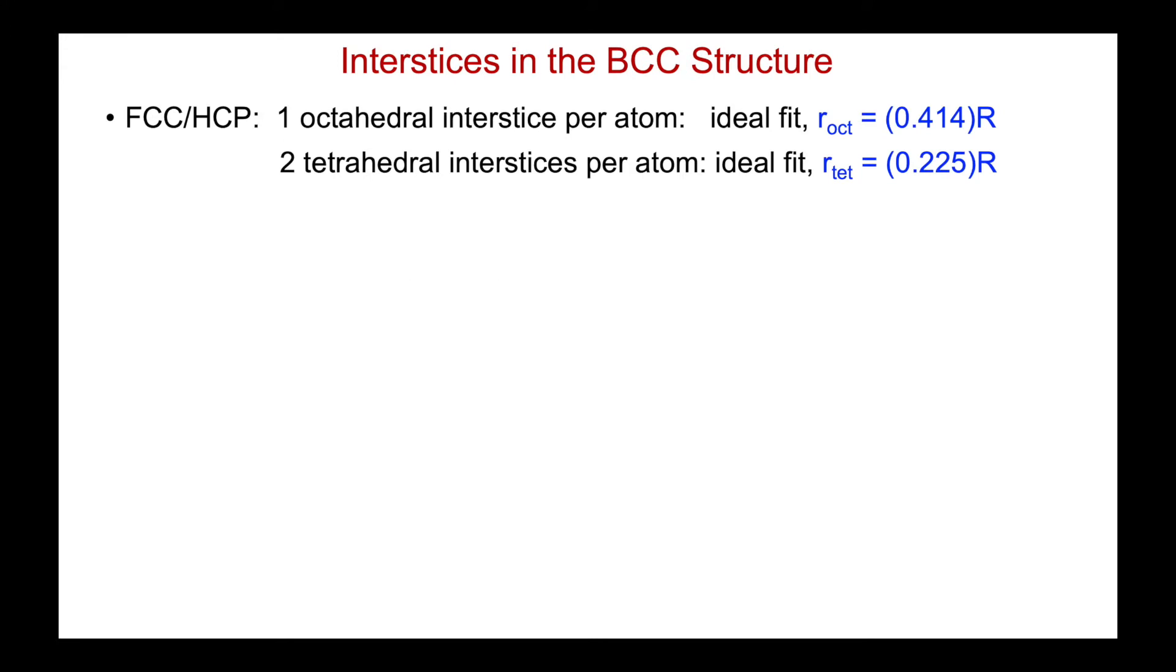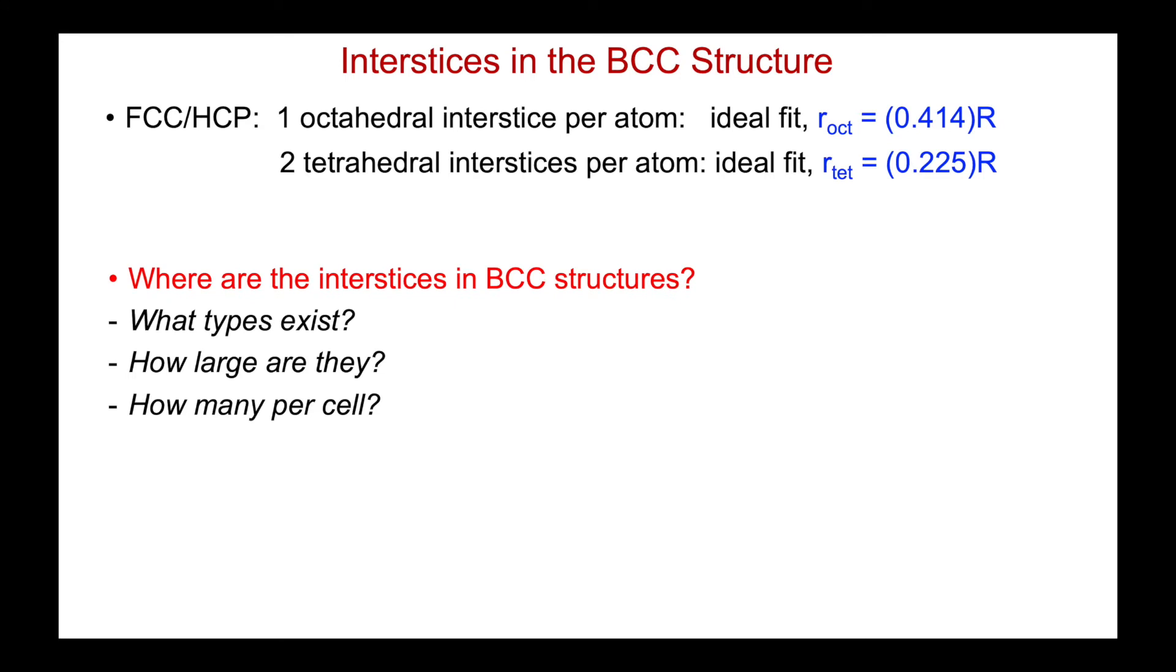For our close packed metal structures, FCC and HCP, we know there's one octahedral interstice per atom, ideal fit with a radius ratio of 0.414, and two tetrahedral interstices per atom that are smaller with an ideal fit of 0.225 radius ratio. So where are the interstices in BCC structures? What types exist? How large are they? And how many are there per unit cell?